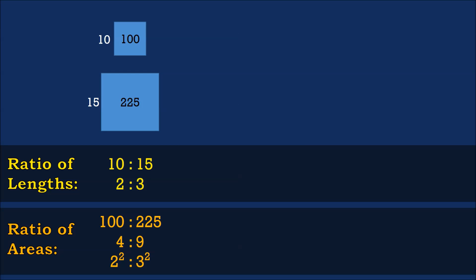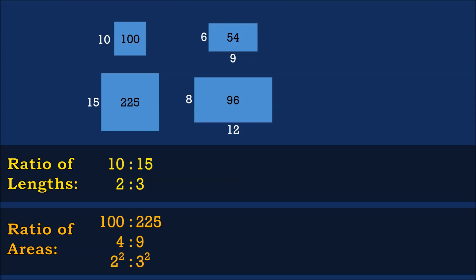Let's try with another shape — a rectangle of sides 9 and 6, giving us an area of 54, and a similar rectangle of sides 12 and 8, giving us an area of 96. The ratio of the lengths, using either of the two dimensions — let's say 6 is to 8 — simplifies to 3 is to 4.